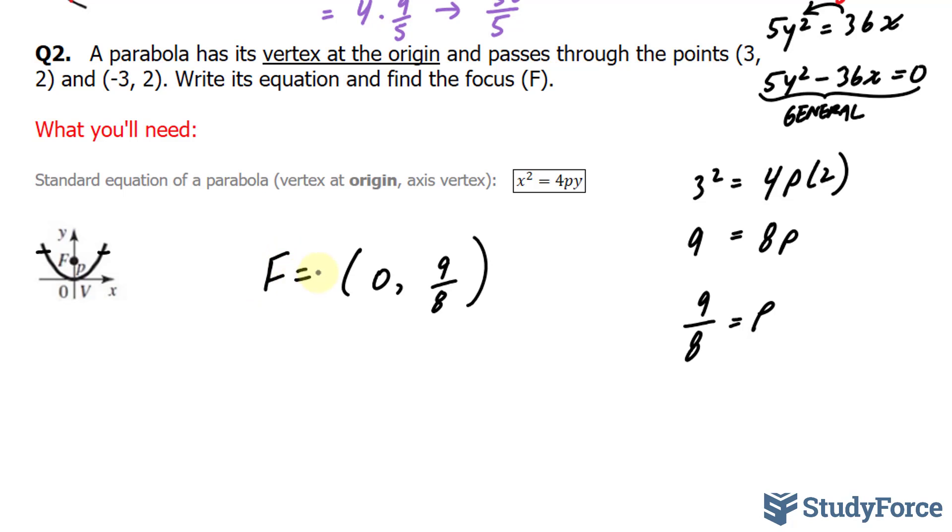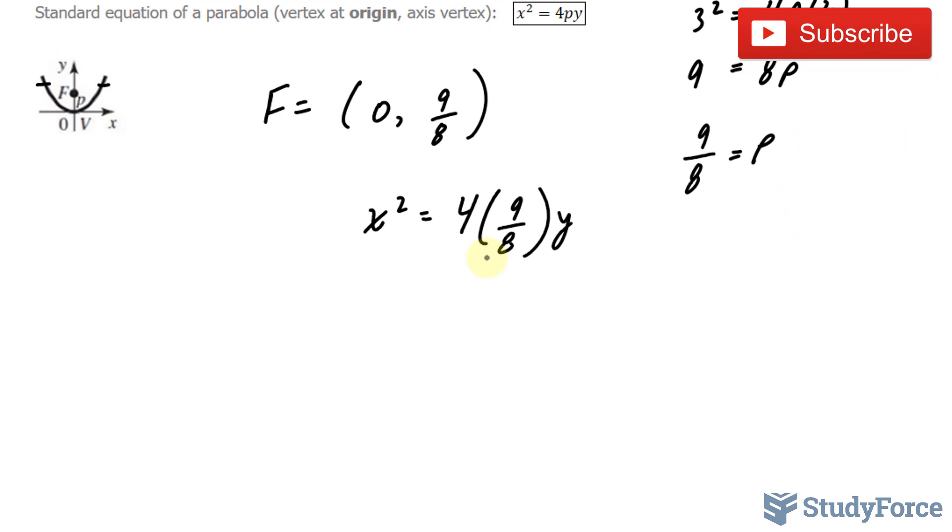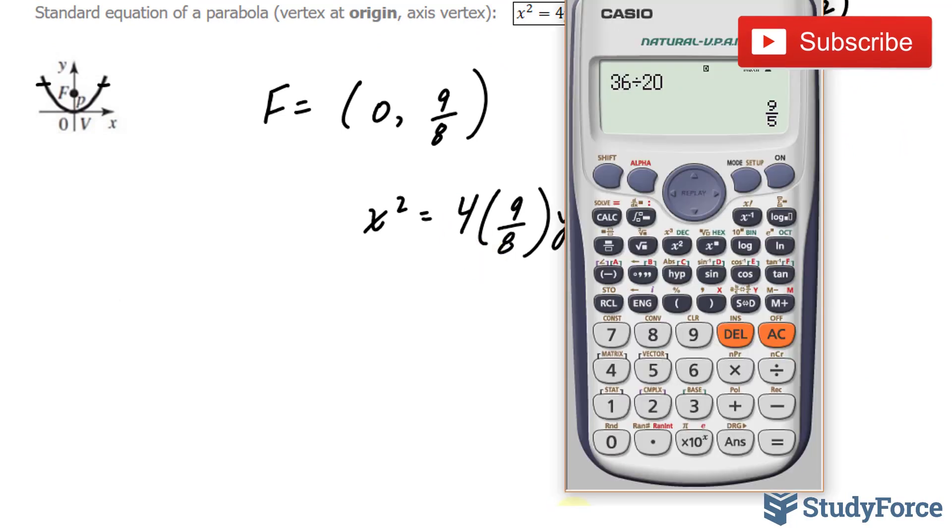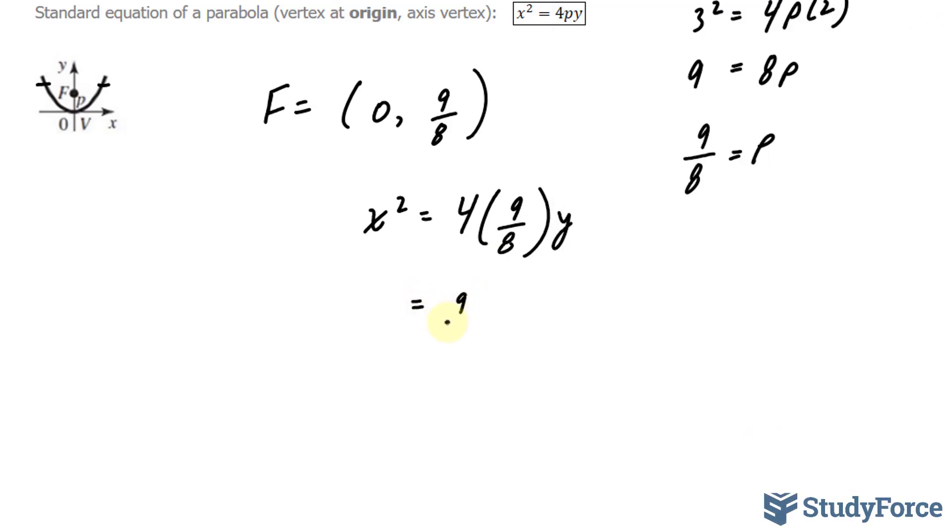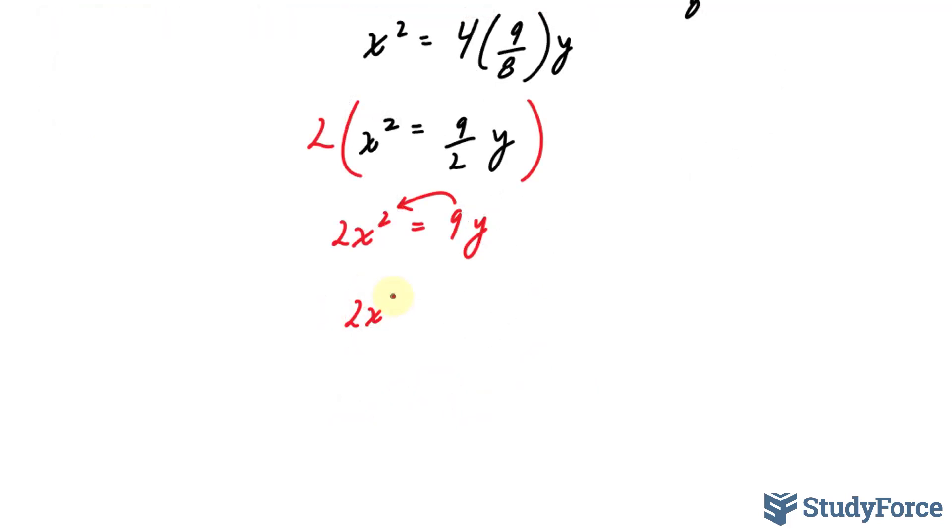Finally, all we have to do is write all of this information into our equation. x² = 4 × (9/8)y. Multiplying 4 × (9/8), 4 × 9 is 36, 36 ÷ 8 gives us 9/2. If we don't want any fractions, we can multiply this whole thing by 2. We end up with 2x² = 9y. Bringing that over gives us 2x² - 9y = 0.